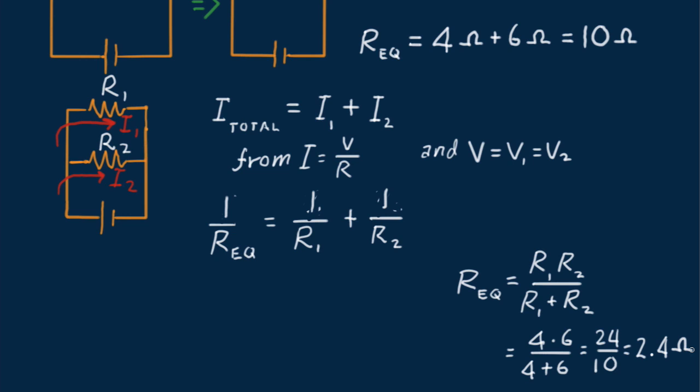In summary, a product over sum rule applies only to a pair of resistors in parallel. More generally, the equivalent resistance of a parallel circuit with n number of resistors can be found from this extended equation.